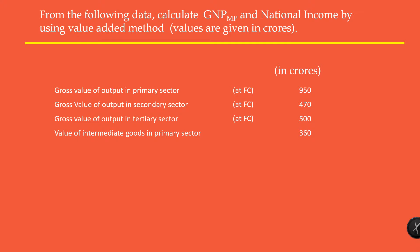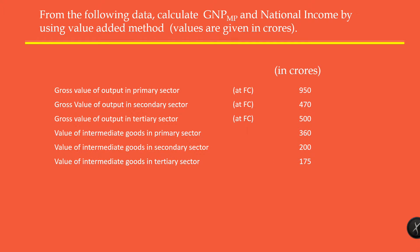Value of intermediate goods in primary sector: 360 crores. Value of intermediate goods in secondary sector: 200 crores. Value of intermediate goods in tertiary sector: 175 crores. Depreciation: 20 crores. Indirect tax: 35 crores.